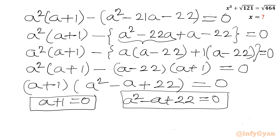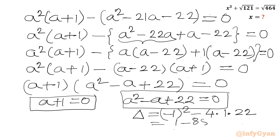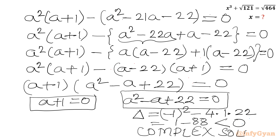For the quadratic factor a² − a + 22 = 0, let us check the discriminant: b² − 4ac = (−1)² − 4(1)(22) = 1 − 88 = −87. Since this is negative, it will generate complex solutions, so we reject this factor.